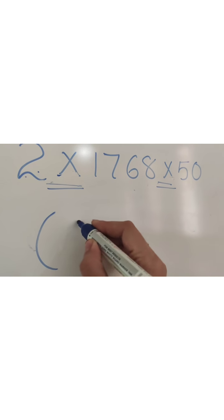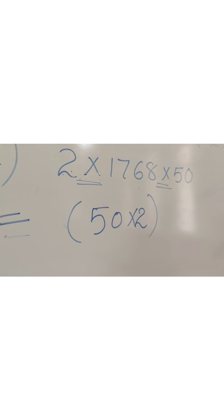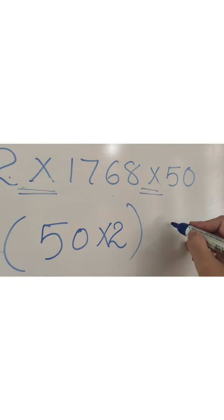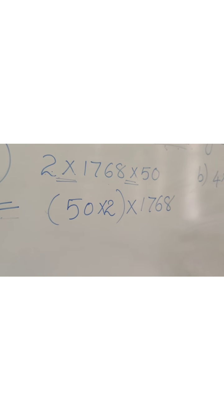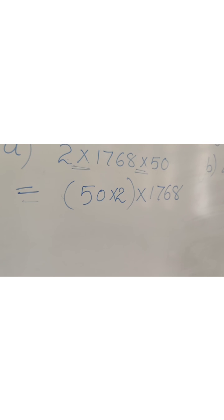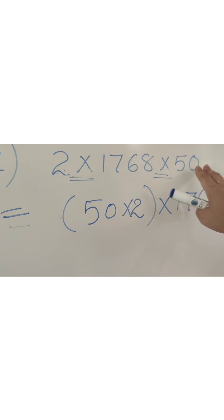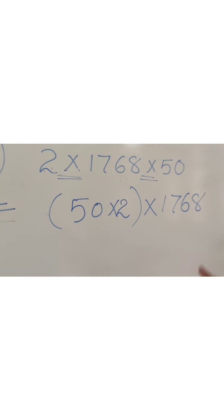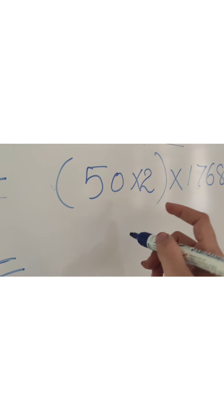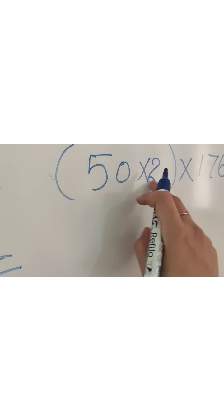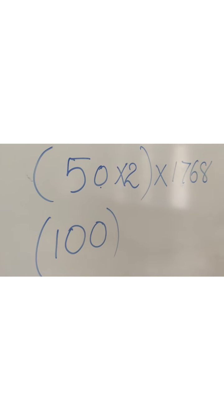We will take 2 and 50 to get 0 at the ones place. So the first group is 50 multiplied by 2, and 1768 remains as it is with a multiplication sign between them. Numbers haven't changed — only their order has changed. Now multiply the bracket first: 5×2 = 10, and with the zero that's already there, 50×2 = 100. And 1768 remains as it is.